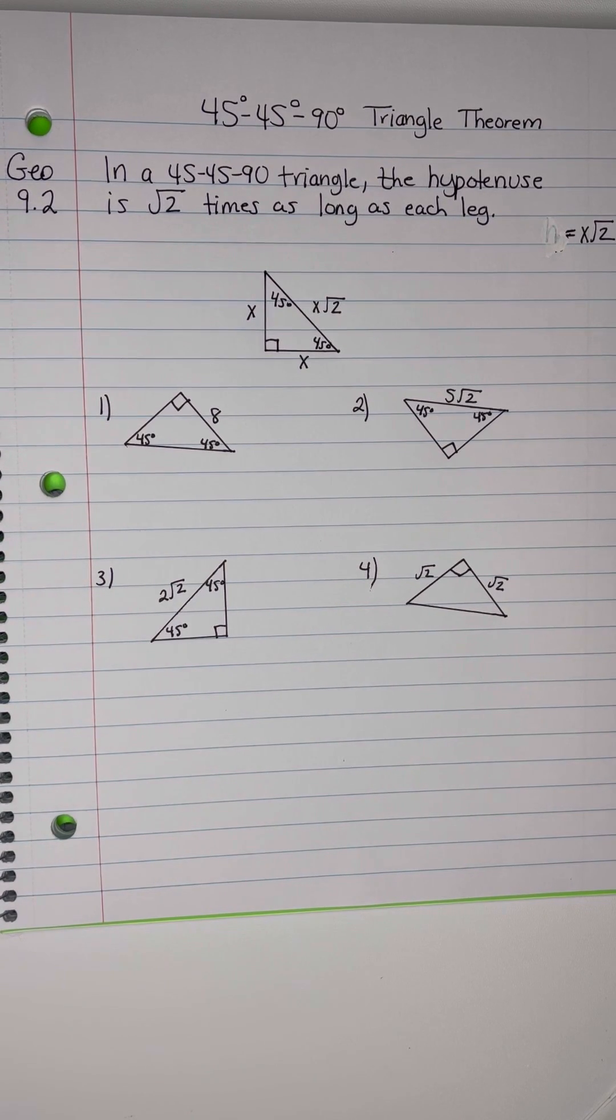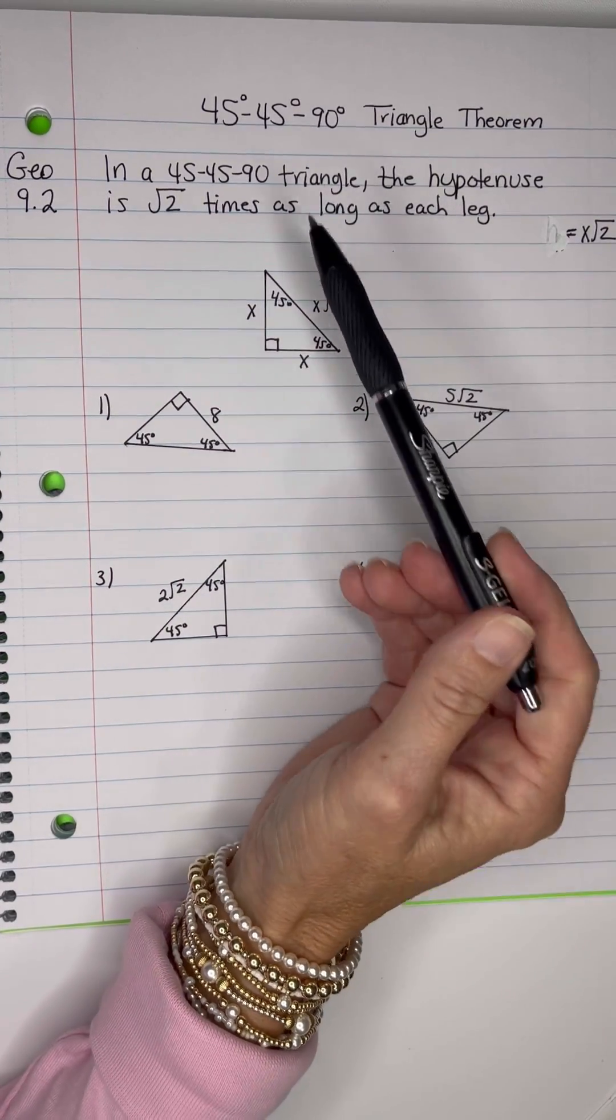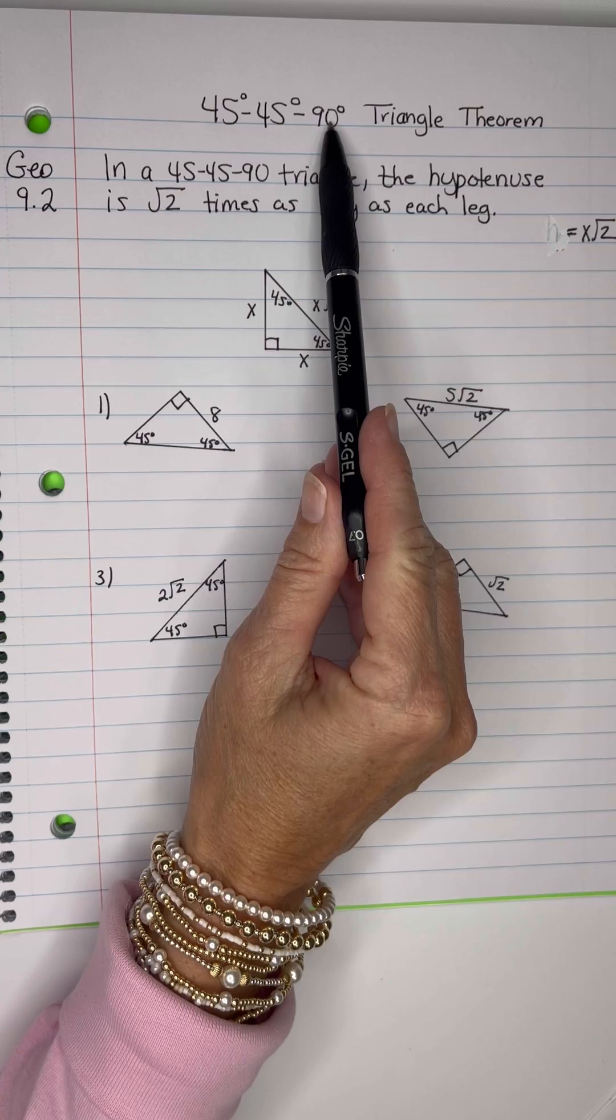We are going to find some missing measures of a triangle using a shortcut. It works with triangles that are 45-45-90 triangles.